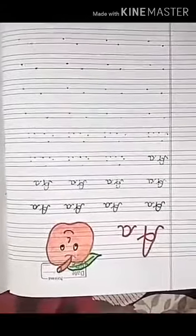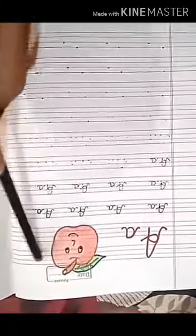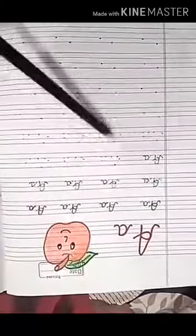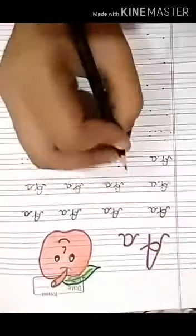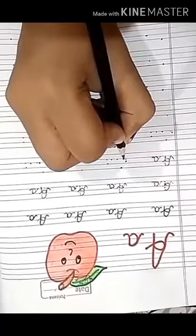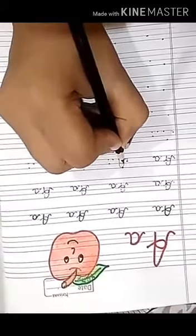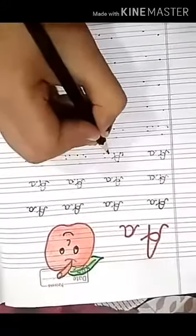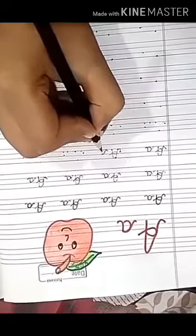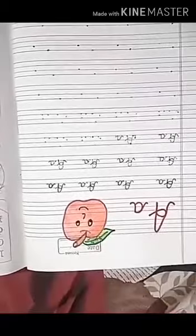So kids, today you all will do this worksheet of capital cursive A and small cursive A. This is A and this is a picture of apple. A is for apple. First you have to make small fold, slanting line, C, and then fold. So today you all will do this worksheet. Thank you.